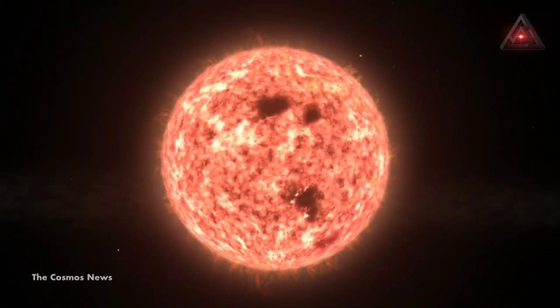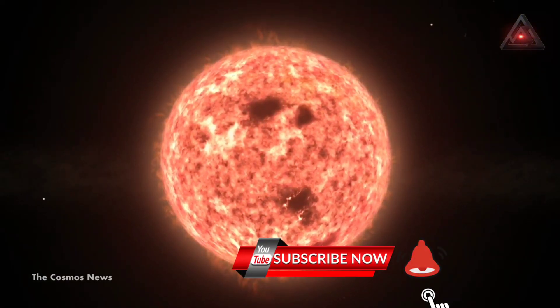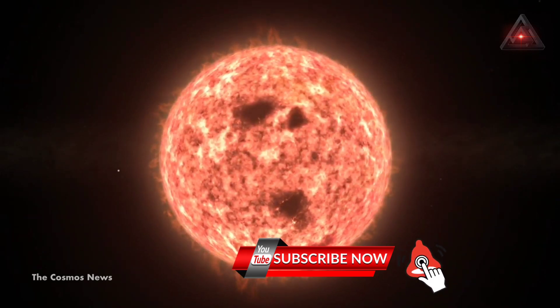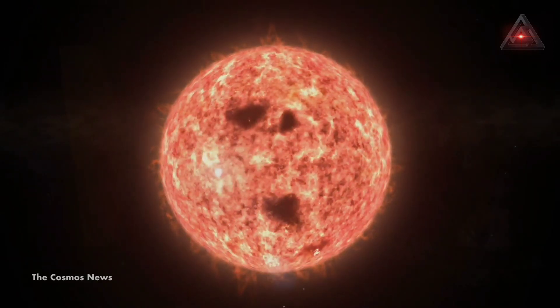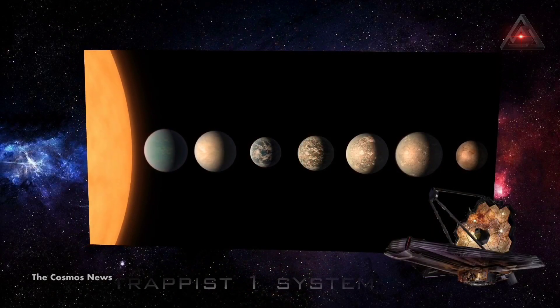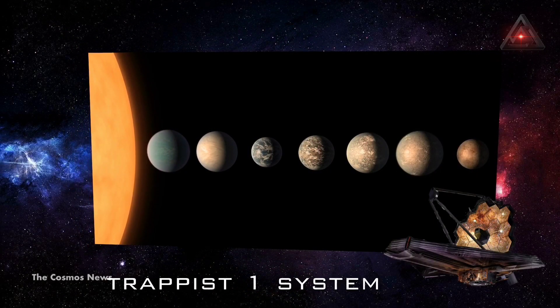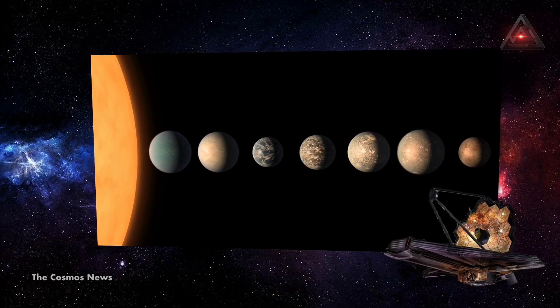Small, cool M dwarf stars like TOI-700 are common in the universe, and many have been found to host exoplanets in recent years, like the TRAPPIST-1 system and its seven exoplanets that the James Webb Space Telescope will observe.